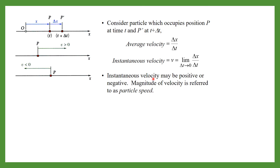Instantaneous velocity may be positive or negative. If you are moving in the positive direction then instantaneous velocity is positive, and if moving in the negative direction then velocity is negative. The magnitude of velocity is referred to as speed. Even if the velocity is negative, the magnitude is always positive — that positive magnitude is called speed. So velocity can be positive or negative depending on direction, but speed is always positive.